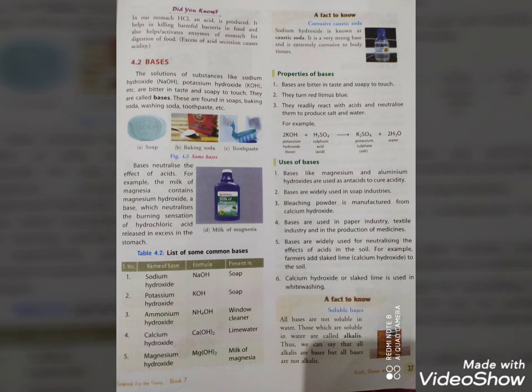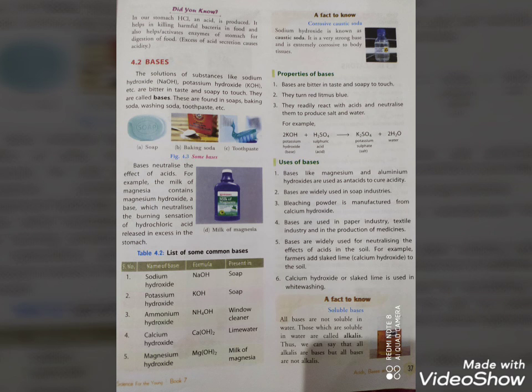For example, farmers add calcium hydroxide to the soil to neutralize acidity. Calcium hydroxide is also used in whitewashing of homes.